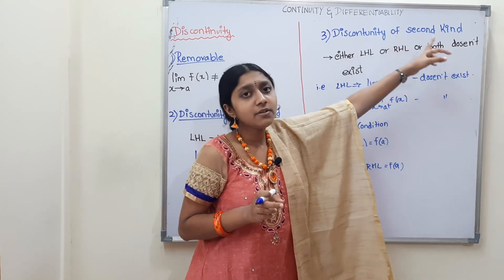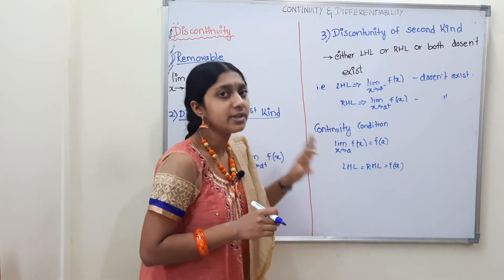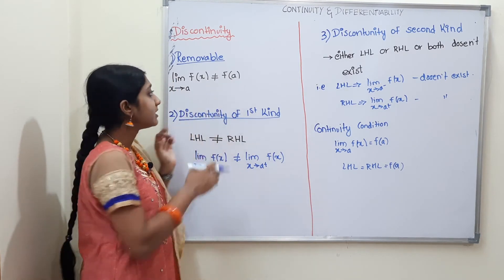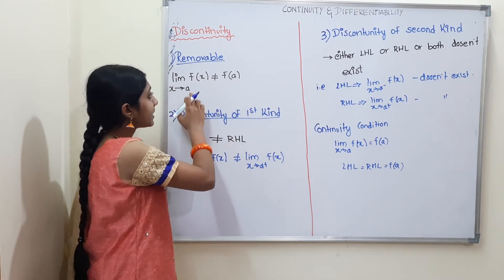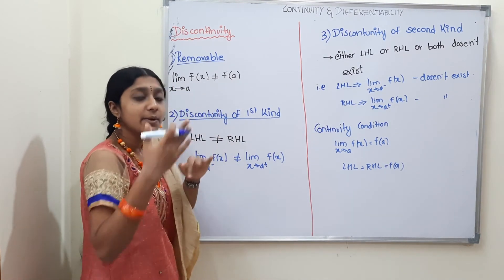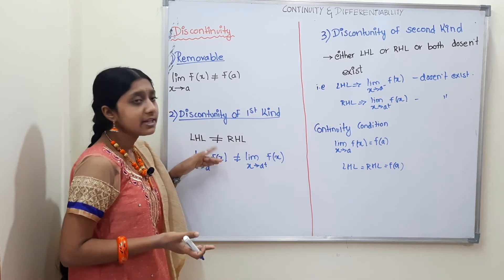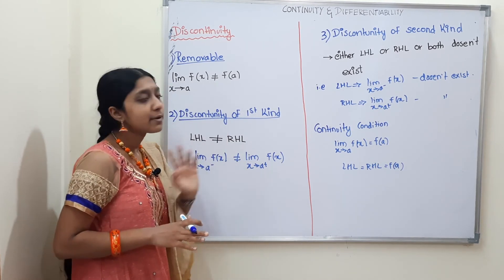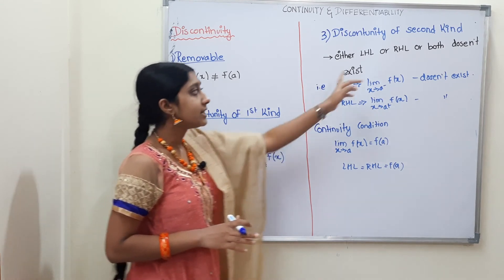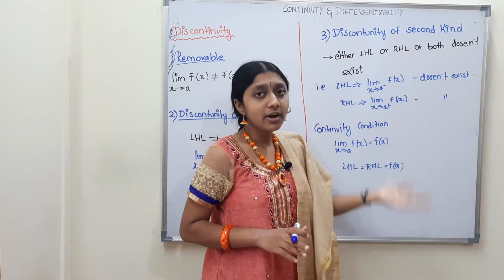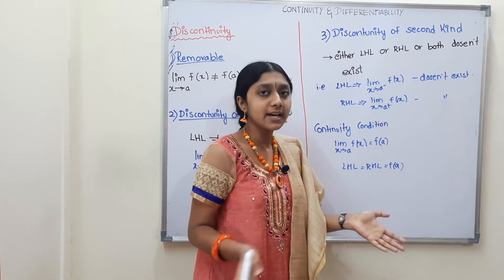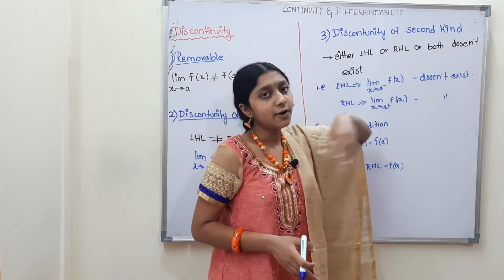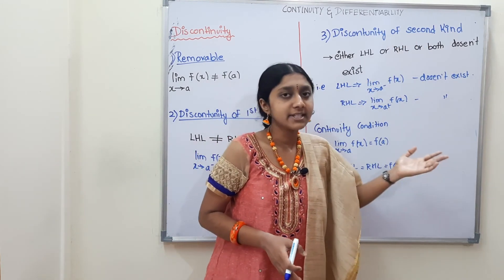Discontinuity of second kind — so there are many types. Removable discontinuity is when the limit exists but is not equal to f(a). First kind is when LHL and RHL are both defined but not equal. Either LHL or RHL exists but not both — that is discontinuity of second kind.